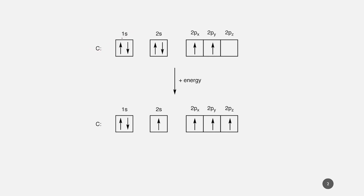We saw before that a carbon atom has two electrons in the 1s orbital, two in the 2s orbital, and two in the p orbital. When the carbon atom gains energy, one of the electrons moves to the vacant p orbital. Now you will have one single electron in the 2s orbital, and the three other electrons in the p orbital. This is the excited state.